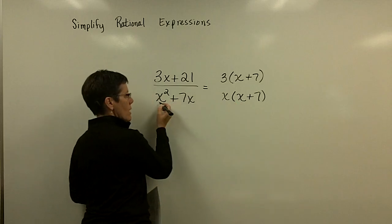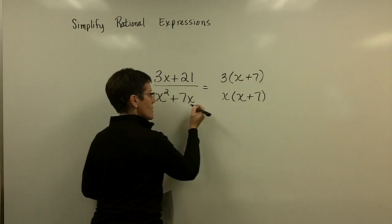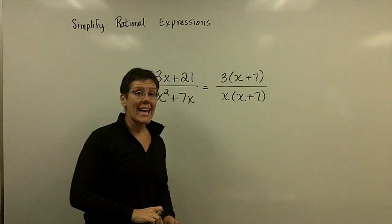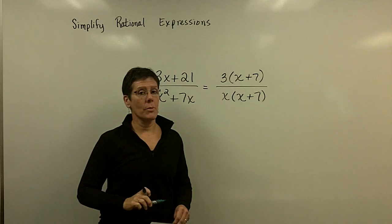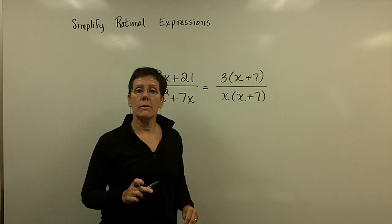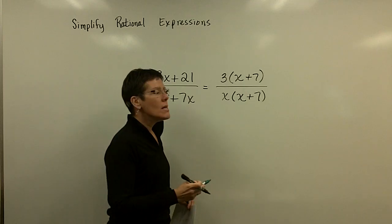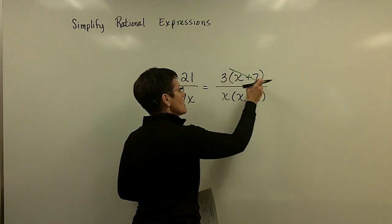If I were to multiply this out and get the x squared, an x times 7 gives me that 7x. And these are in factored form, remember, and you can remove common factors. So the factors can be binomials, but they have to look identical, and these do.